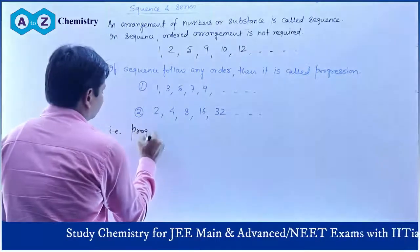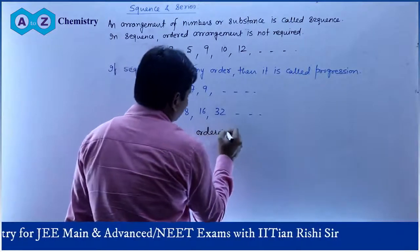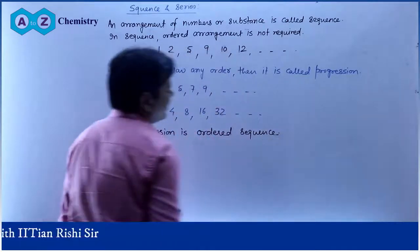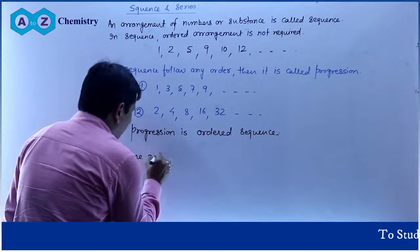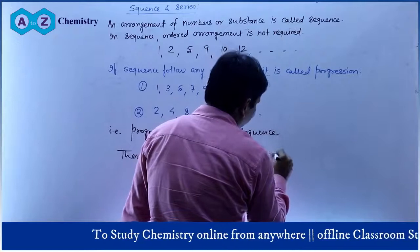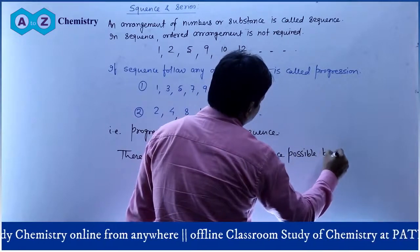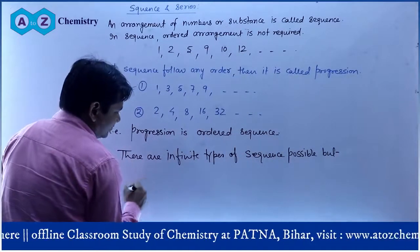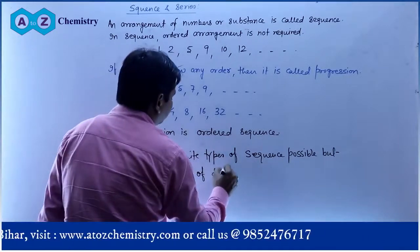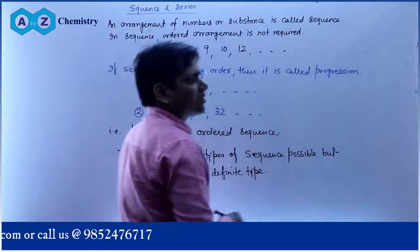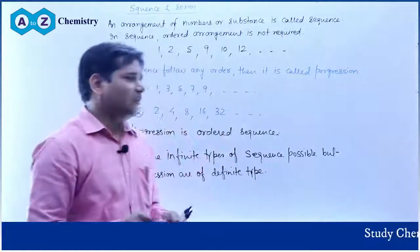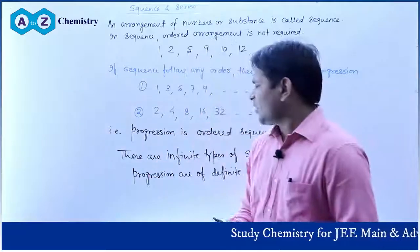A Progression is a particular type of sequence. Progression is an ordered sequence. If a sequence is ordered, it becomes a Progression. There are infinite types of sequences possible because you can arrange in any manner, but Progressions are of a definite type. We will study 3 types of progression: arithmetic progression, geometric progression, and harmonic progression.